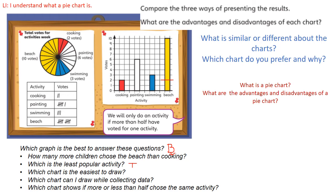Which chart can I draw while I'm collecting the data? Well there's only one that you can actually do while you're going along, isn't there? Which one do you think that is? And which chart shows if more or less than half chose the same activity? Well there's only one chart that really allows us to compare to a whole, and that's the pie chart.